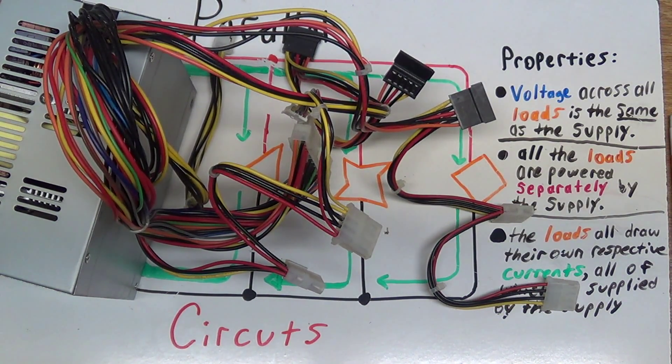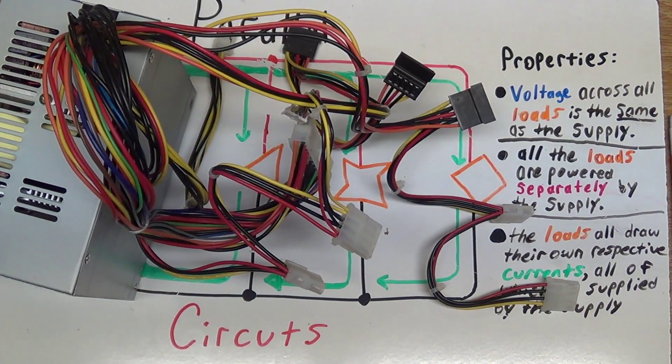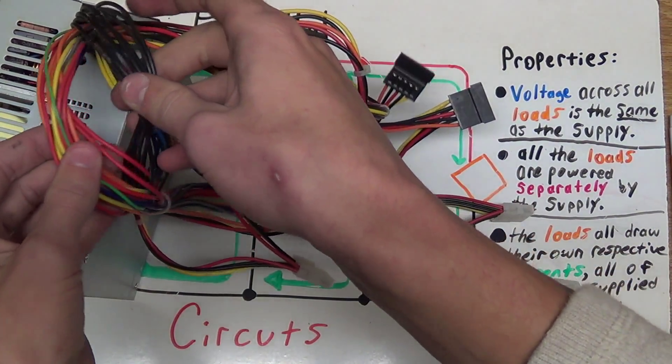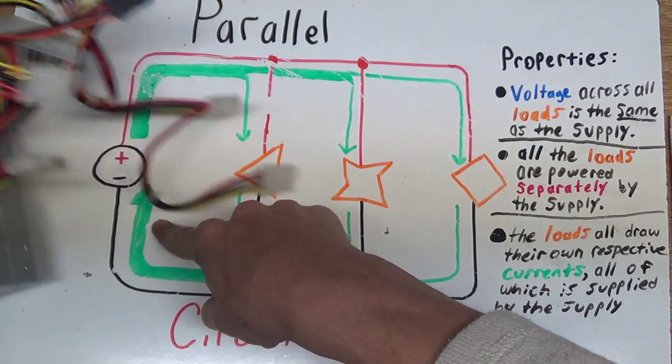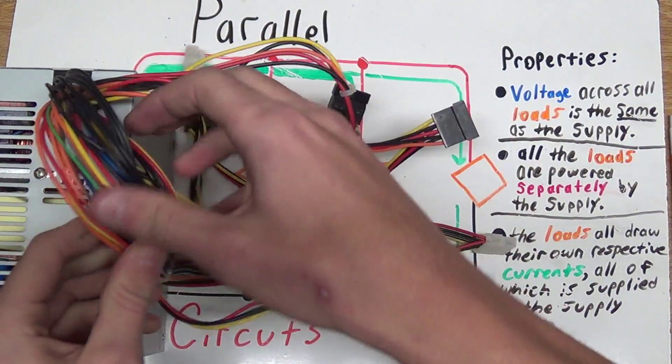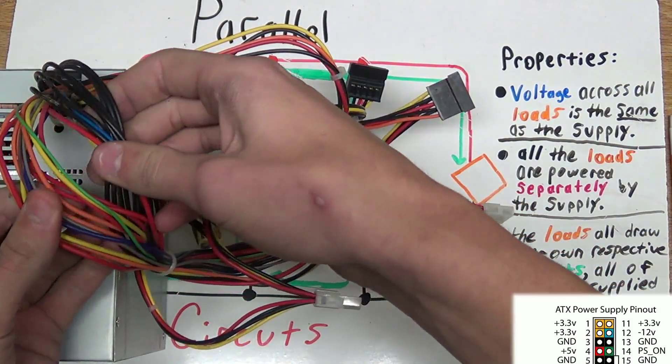Usually when you design a power supply, you make sure that the wires that are coming out of your power supply can handle the current. Look at this. Look how many ground wires there are to handle the current coming back to the power supply. And look how many orange and red wires there are to carry the voltages throughout the whole computer.